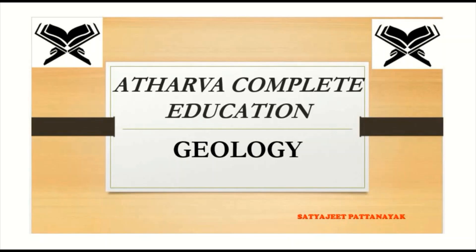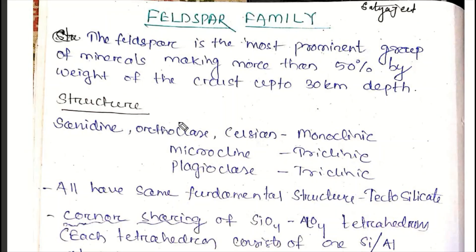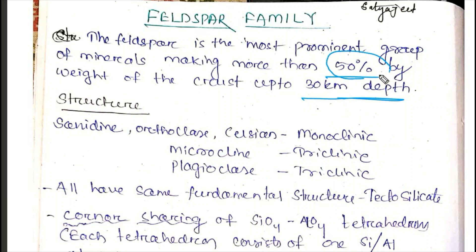So, let's start this lecture. First, the feldspar family is the most prominent group of minerals, making more than 50% by weight of the crust up to 30 km depth. The feldspar family includes minerals like Sanidine, Orthoclase, Celcian, Microcline, and Plagioclase.